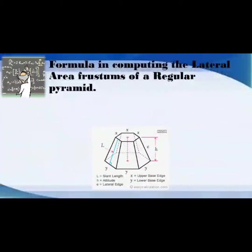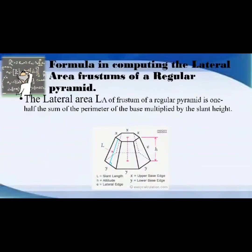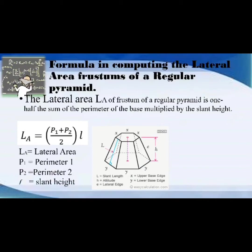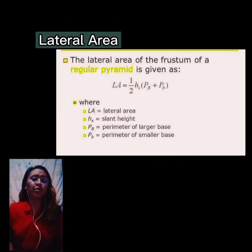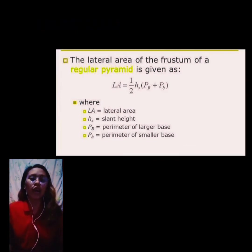Now let's go to the formula for computing the lateral area of frustums of a regular pyramid. The lateral area is one-half the sum of the perimeters of the bases multiplied by the slant height, written as: LA = (P1 + P2) / 2 × l, where LA is the lateral area, P1 is the perimeter of base 1, P2 is the perimeter of base 2, and l is the slant height, as shown in the illustration.